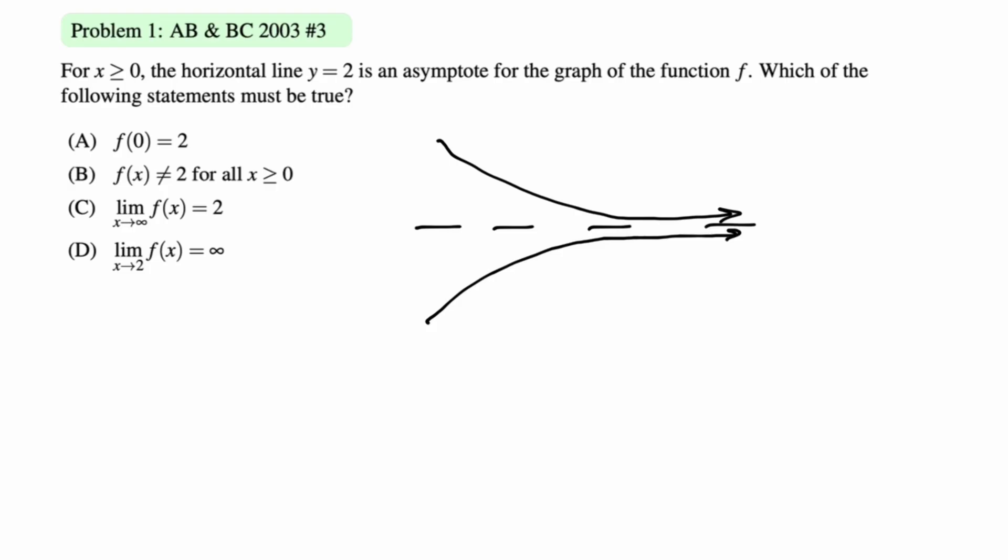f of 0 equals 2, that definitely does not need to be true, right? Like, think of an exponential function or something. f of x is not equal to 2 for all x greater than or equal to 0. I know that the picture that I drew would seem to suggest that's true, but there's no reason that you cannot cross a horizontal asymptote. It's an end behavior, so b is not the answer.